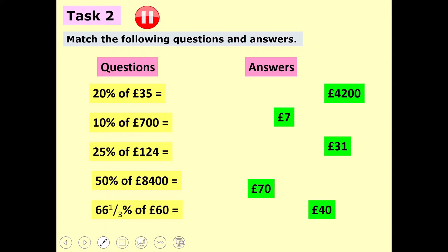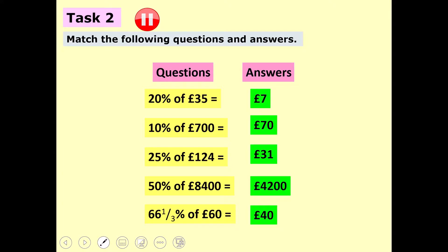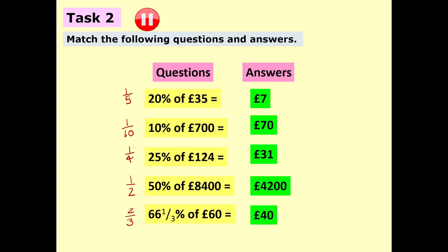Let's go through the answers. 20% of £35: 20% is a fifth, so divide 35 by 5 to get £7. 10% of £700: a tenth of 700 gives 70. 25% of £124: a quarter, so divide 124 by 4. 50% of £8400: a half, so 8400 ÷ 2 = £4200. And 66 and two thirds percent of £60: that's two thirds — divide 60 by 3 to get 20, then multiply by 2 to get £40. Well done if you got that last one.